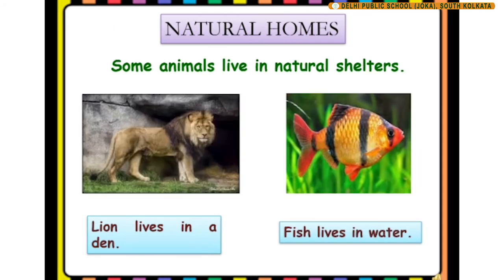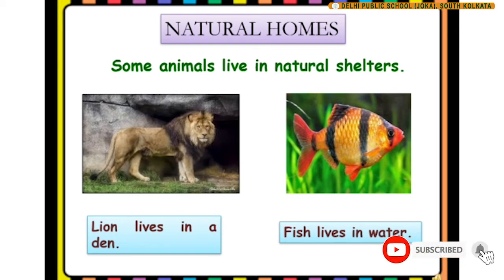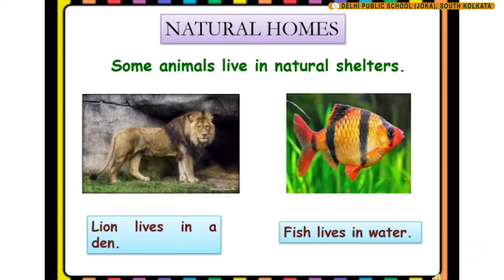Let us know about the natural homes of animals. Some animals live in natural shelters. We can see a lion — a lion lives in a den. In the second picture, we can see a fish — fish live in water.